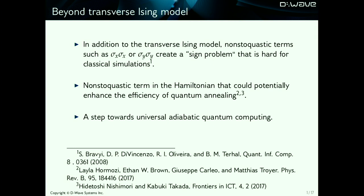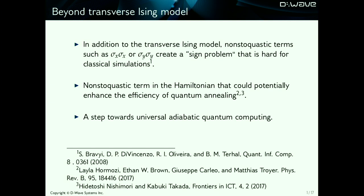So we are thinking of going beyond the transverse Ising model, where we want to implement non-stochastic terms in the Hamiltonian such as sigma XX or sigma YY. They generate a sign problem which is intrinsically hard to simulate using classical methods. In addition, there is numerical evidence showing that including non-stochastic terms in the driver Hamiltonian actually enhances the efficiency of quantum annealing. Implementing non-stochastic Hamiltonians is a step towards making universal quantum computing or universal adiabatic quantum computing, which is eventually what we want to do to fully utilize the power of an adiabatic quantum computer.